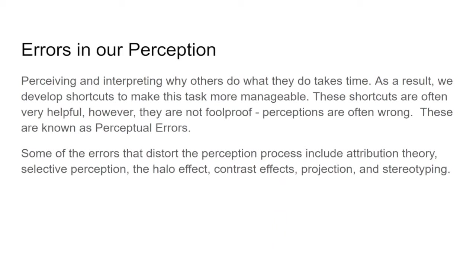Perceptions can be wrong — these are known as perceptual errors. Perceptual errors can be deadly in some cases. If you're flying an airplane and you think you're flying level when you're actually flying down, that's a serious problem. This has been the result of many airplane accidents where pilots lost what's called situational awareness — they don't know where they are and end up flying into the ground. Some of the errors that distort our perceptual process include attribution theory, selective perception, the halo effect, contrast effects, projection, and stereotyping.